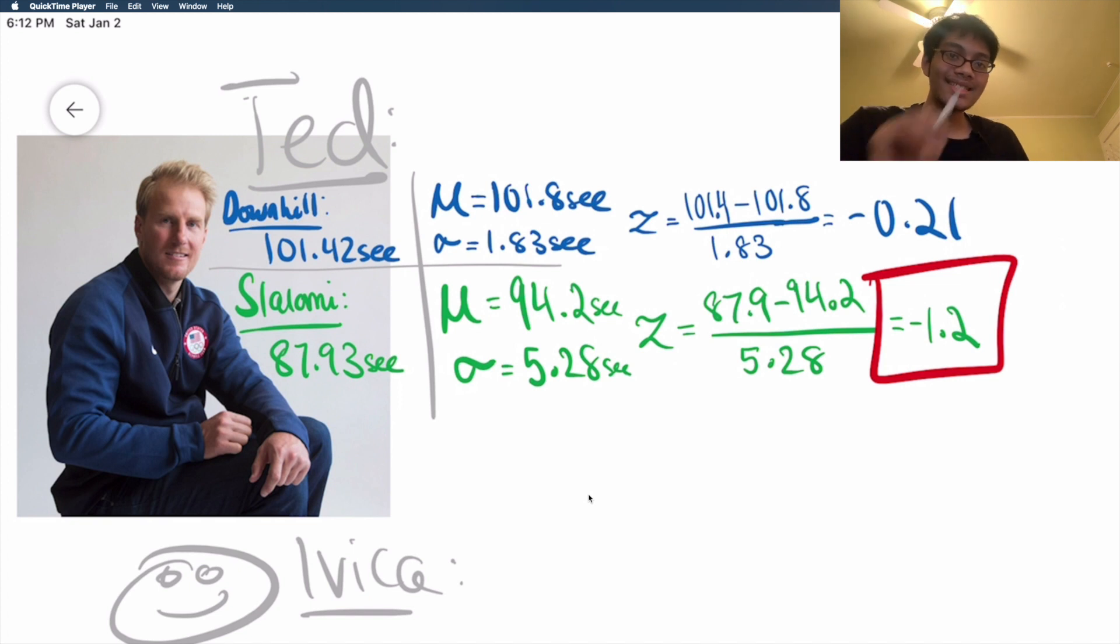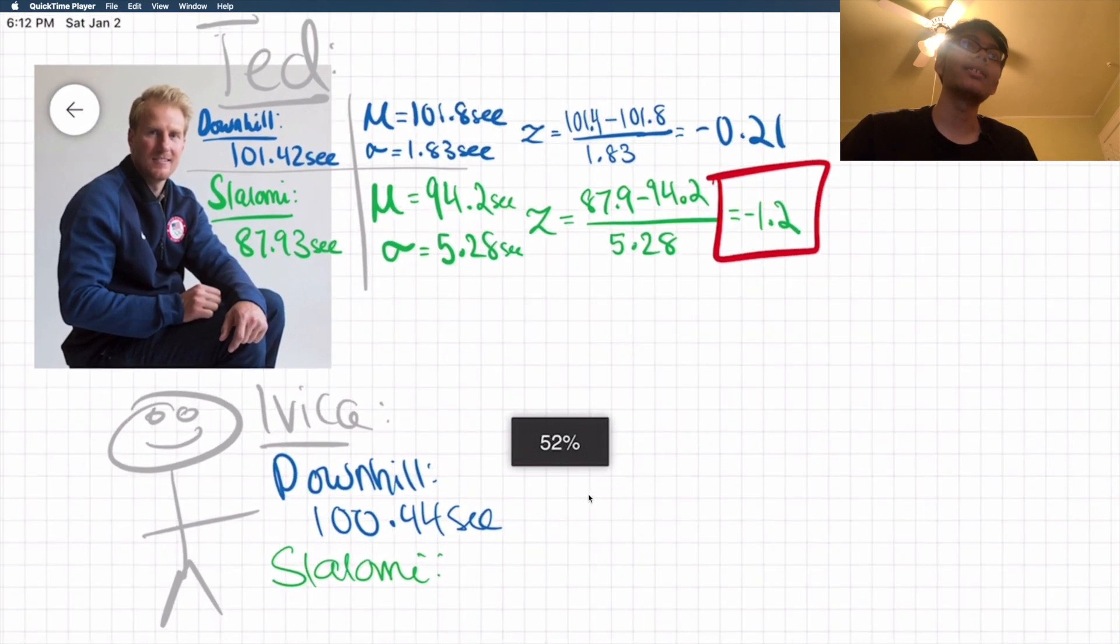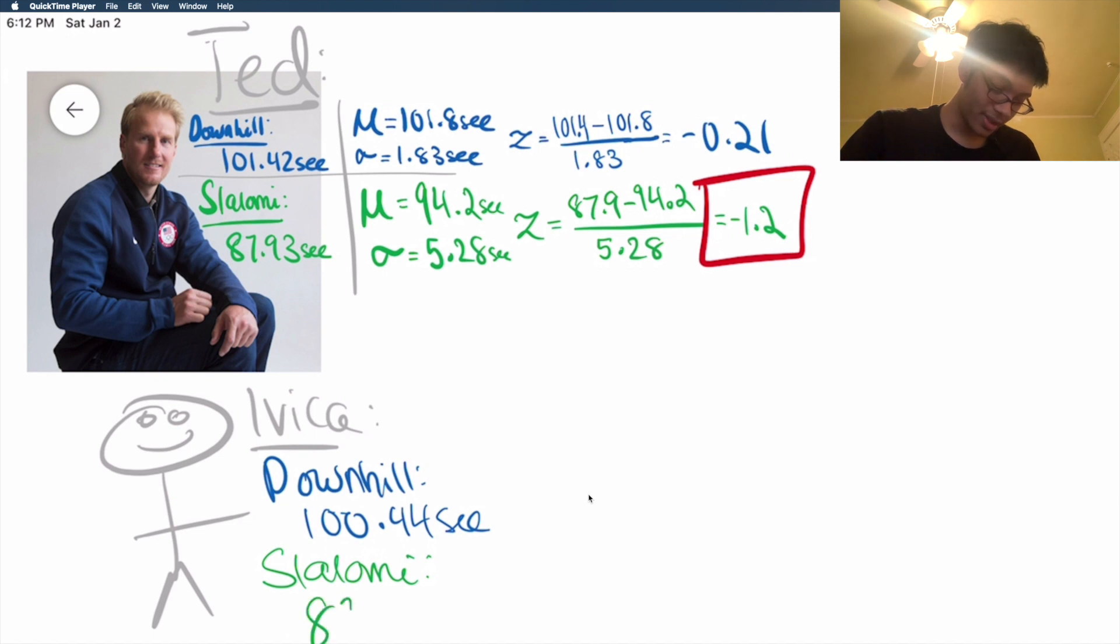So what are the stats for Ivica? Well, let's see his downhill stats. In downhill, Ivica has a standard time of 100.44 seconds. And these are the actual stats by the way, you can search them up. And for the Slalomi, what are the stats for this guy? For the Slalomi, this guy has a stat of 89.44 seconds, which is not bad.